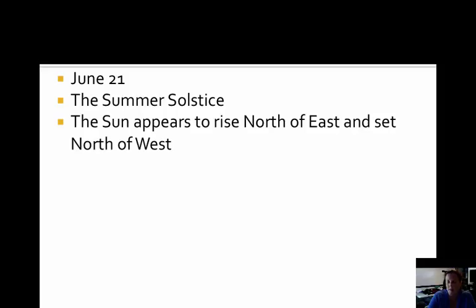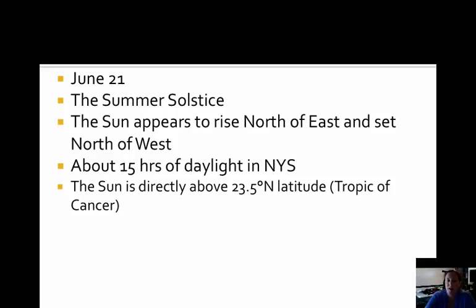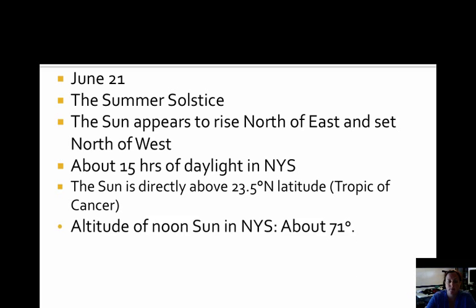This has to do with where the sun is in its orbit and the fact that the northern hemisphere is tilting towards the sun on this day. The direct rays of the sun are most north on this day. We end up with about 15 hours of daylight in New York State — the longest day of the year. The sun is directly overhead at the Tropic of Cancer at 23.5 degrees north latitude. The altitude of the noon sun in New York State is about 71 degrees, the highest it ever reaches over the course of the year.